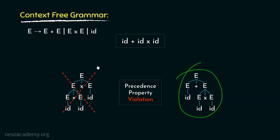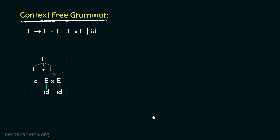So, now we will have to modify our production rules in such a way that will enforce the process to only derive this correct parse tree. So, let's proceed.